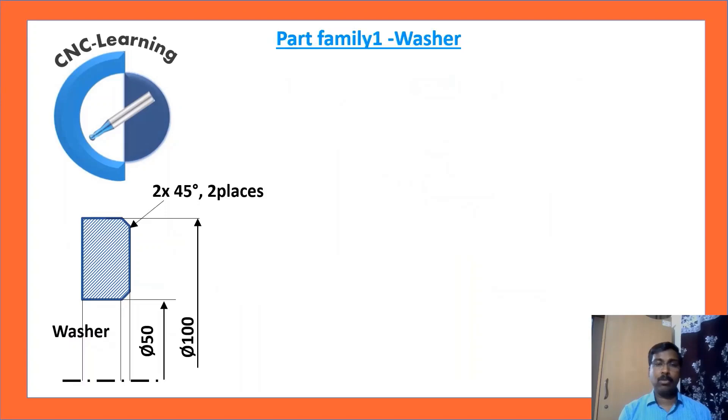Let us look at one part family for a washer. In this sketch, you can see the cross section of a washer, OD, ID, and chamfer. You can have N number of washers with similar configuration with just changing OD, ID, and chamfer.